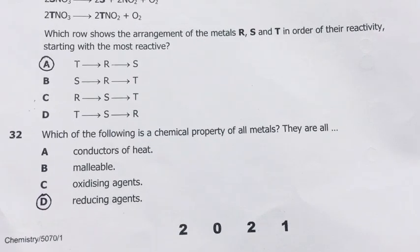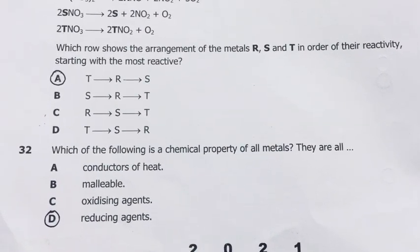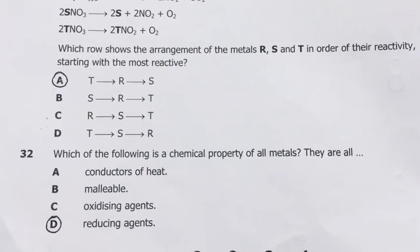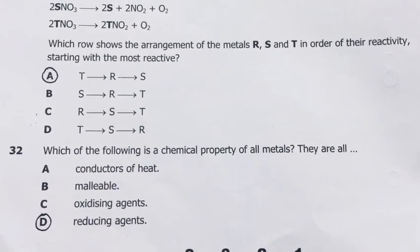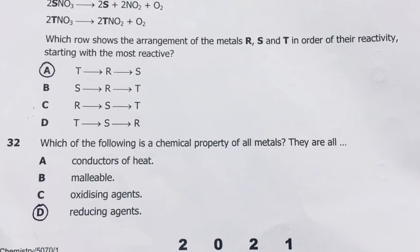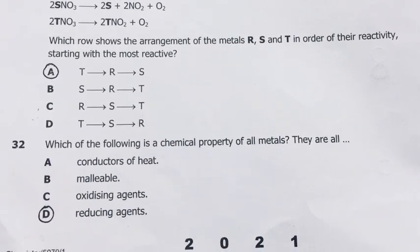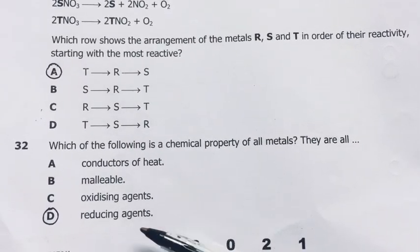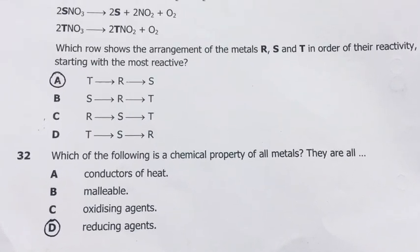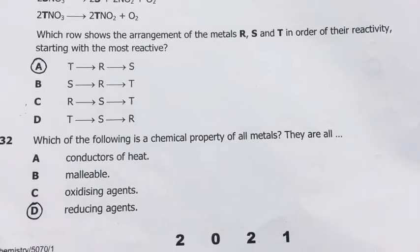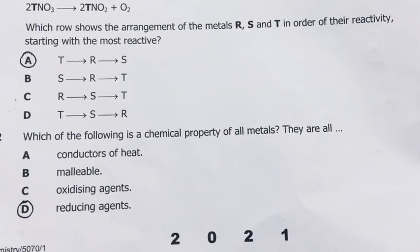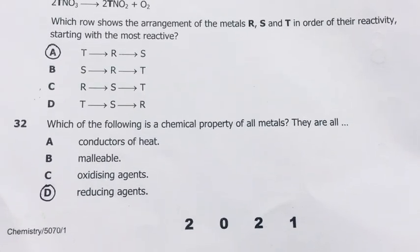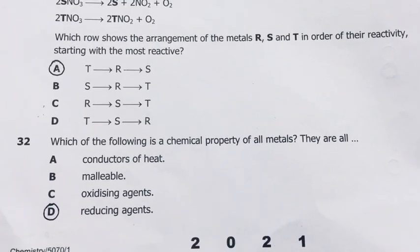Number 32. Which of the following is a chemical property of all metals? They are all reducing agents, meaning they donate electrons to become oxidized, or for their charges to increase to positive. They form positively charged ions, they are electropositive. So the answer there is D. They are reducing agents because they donate electrons, and gain of electrons is reduction. So when they donate, the one that they have given the electrons becomes reduced. So the metal is the reducing agent.